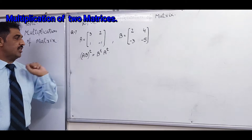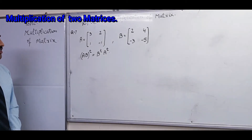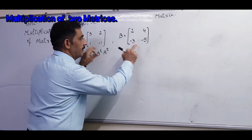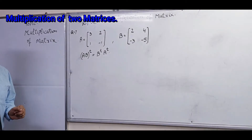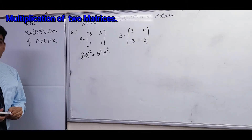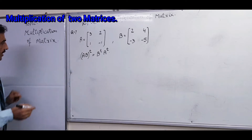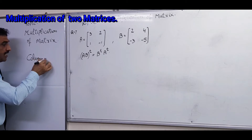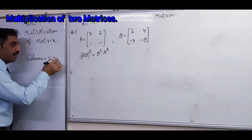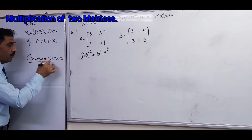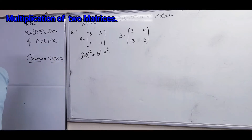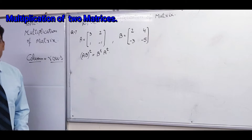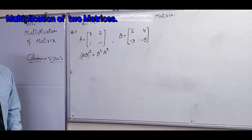If there is no sign between them, it means the relation is multiplication. Before multiplying, we have to check whether both matrices are multipliable or not. The rule is: the number of columns of the first matrix must equal the number of rows of the second matrix.